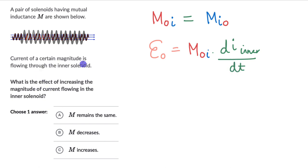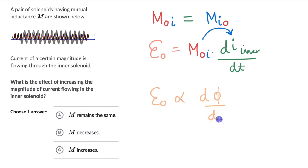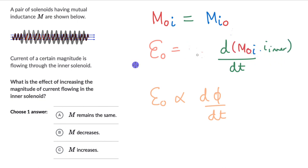The question says a current of a certain magnitude is flowing — what is the effect of increasing that magnitude? To figure that out, I like to take the constant M inside the derivative. From Faraday's law, EMF is proportional to the rate of change of magnetic flux through the coil. Taking M inside, I can equate that quantity with flux, giving: flux equals the mutual inductance of outer with respect to inner, multiplied by the current in the inner solenoid.